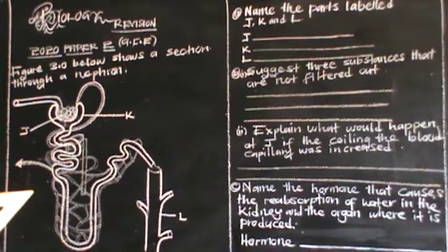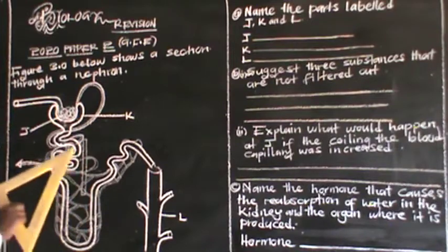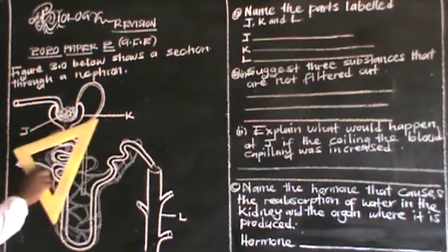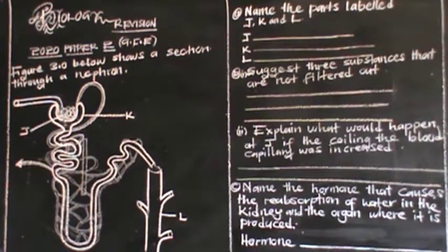In a kidney we have got numerous nephrons where urine is formed. In this case we'll be given this diagram which has been labeled J, K, and L. So the first question asks us to name the parts labeled J, K, and L.